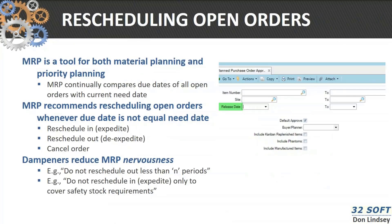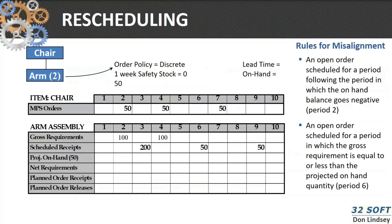Rescheduling. As we had said before, MRP reschedules and is a good tool to help us keep our schedules intact. Once we run the re-explosions, we can re-plan MRP. If I look at my assembly or my MRP explosion again, you can see I've got a scheduled receipt in period 3, a scheduled receipt in period 6, and a scheduled receipt in period 9.